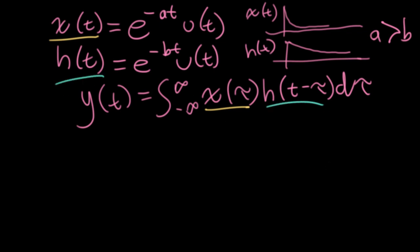And let's draw a tau axis. I'm going to draw an axis here. We'll have x as our stationary function, our x of tau. So let me draw that in.